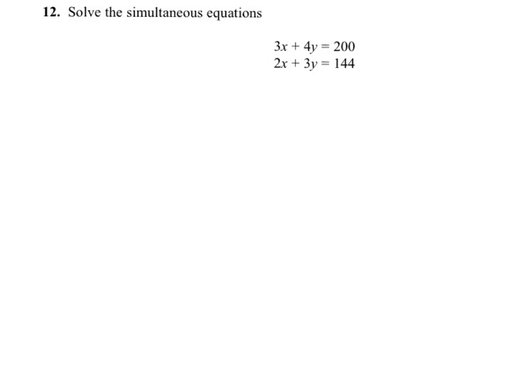In question 12, we need to find the value of x and the value of y. What I will do to these simultaneous equations is multiply the first one on both sides by 2, and multiply the second one on both sides by 3. This will give me another set of simultaneous equations.